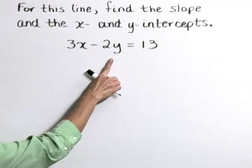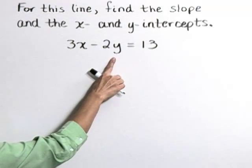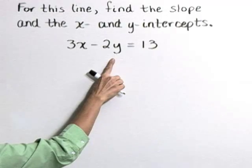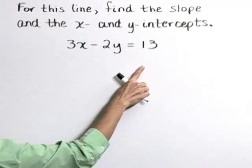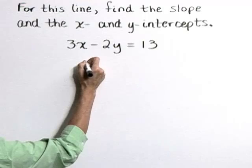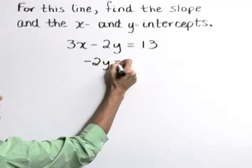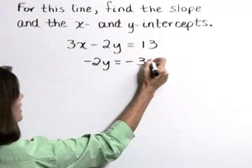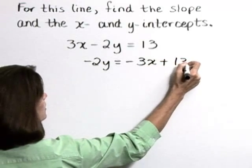I'm going to go ahead and start this by solving for y and putting the equation of this line in slope-intercept form. So let's subtract 3x from both sides, giving negative 2y is equal to negative 3x plus 13.